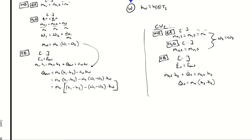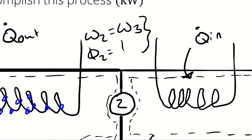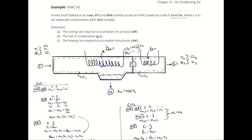So I have four calculations to complete: calculate the mass flow rate of dry air from the volumetric flow rate and specific volume, then use that to calculate Q̇_out, Q̇_in, and ṁ_w. I use T1 and φ₁ to get ω₁, h1, and v1; T3 and φ₃ to get ω₃ and h3. I also need h2 from φ₂ equals 1 and ω₂ equals ω₃, and I need h_f at T2.